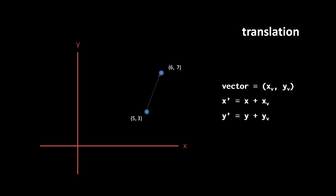Expressed as a formula, x prime, our new x, equals the original x plus x of the vector, and y prime, our new y, equals the original y plus y of the vector.